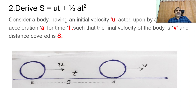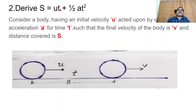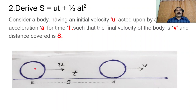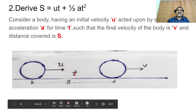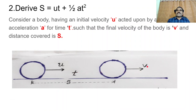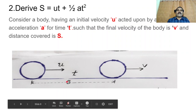The second equation of motion is S equals UT plus half AT square, where S is the distance covered by the body, U is the initial velocity, T is the time taken to travel, and A is the acceleration. To derive this, consider a body having initial velocity U, acted upon by a uniform acceleration A for T seconds, such that the final velocity is V and distance covered is S.